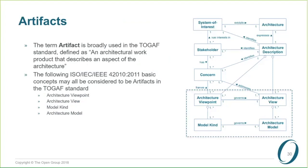TOGAF uses the word artifact broadly and continues to use the word artifact. We had a lot of discussion about whether we should drop the word artifact and put in model kind and model. By and large, the feedback we got from the people who use the TOGAF standard is that that would create more problems than it would solve. So in relating these two standards together, we need to recognize that in the TOGAF standard, anything in that box could be considered to be an architectural work product that describes an aspect of the architecture: architecture viewpoint, architecture view, model kind, or architecture model.